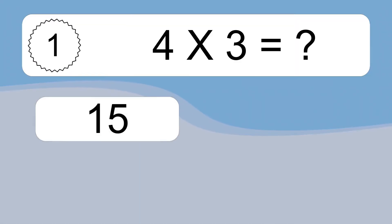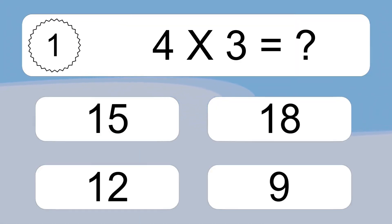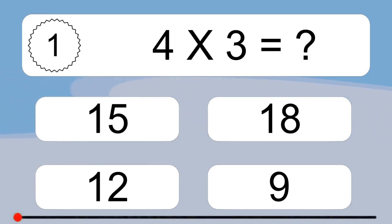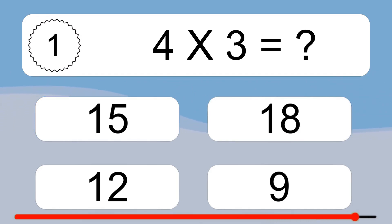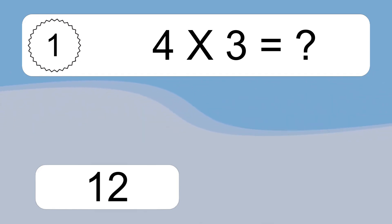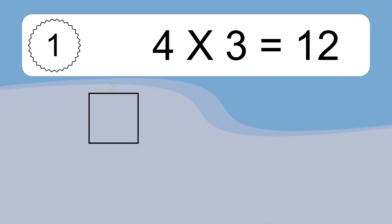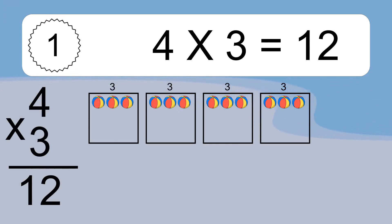4 times 3 equals what? 4 times 3 equals 12.